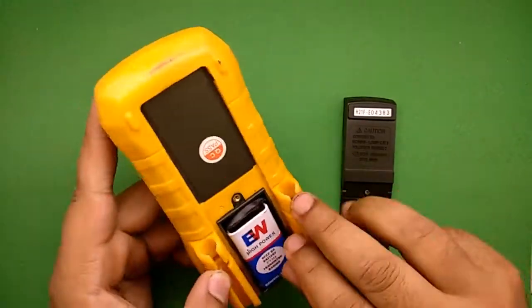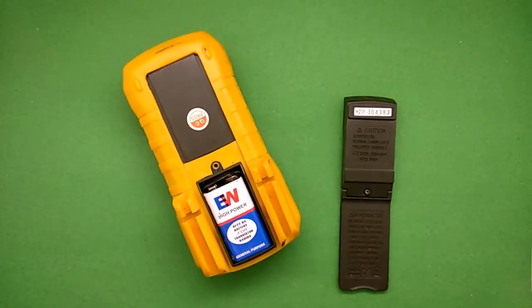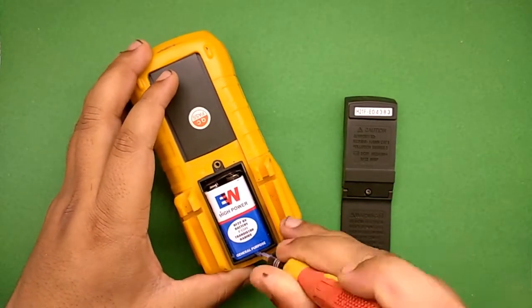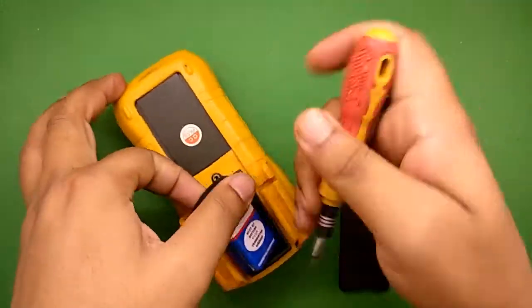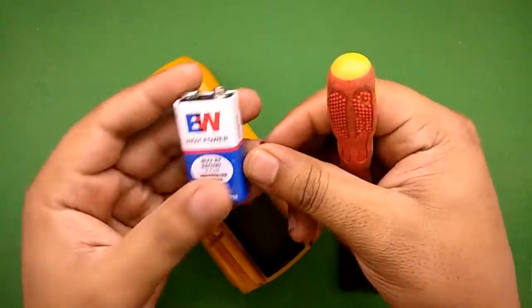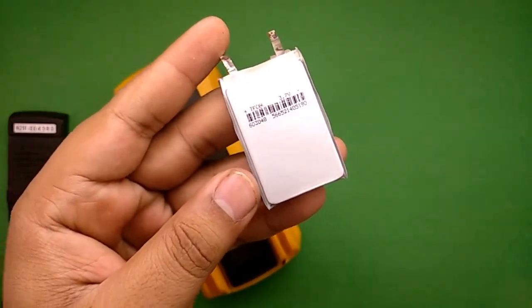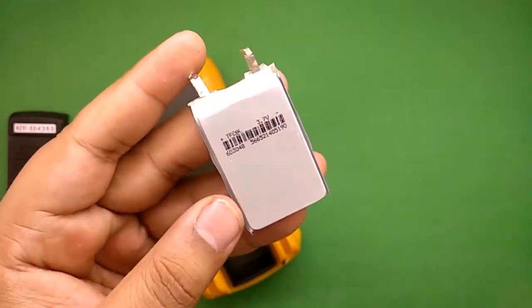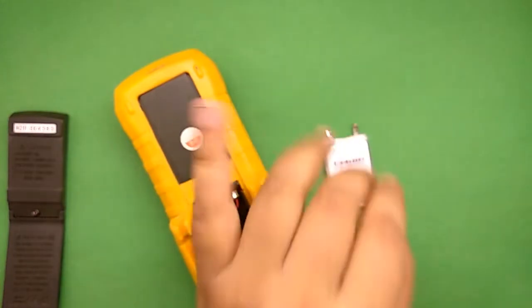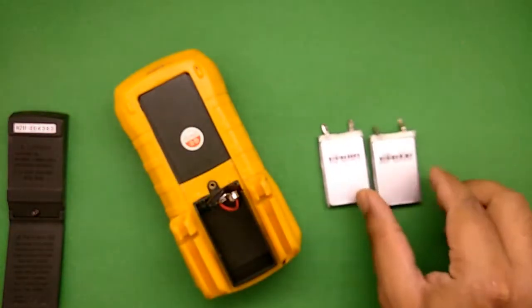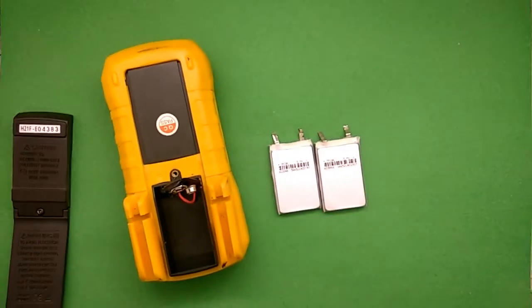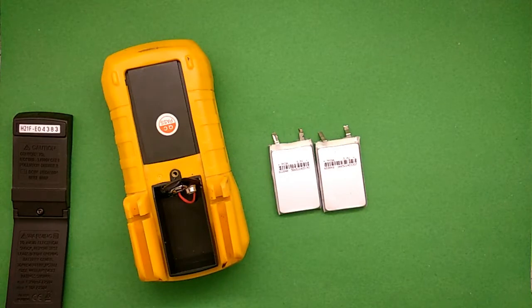Now first I've opened this battery from the case. I have successfully disconnected. Now I'm gonna use this 3.7 volt lithium-ion battery. It is a rechargeable one. So this is the battery which we are gonna use to power up this multimeter.